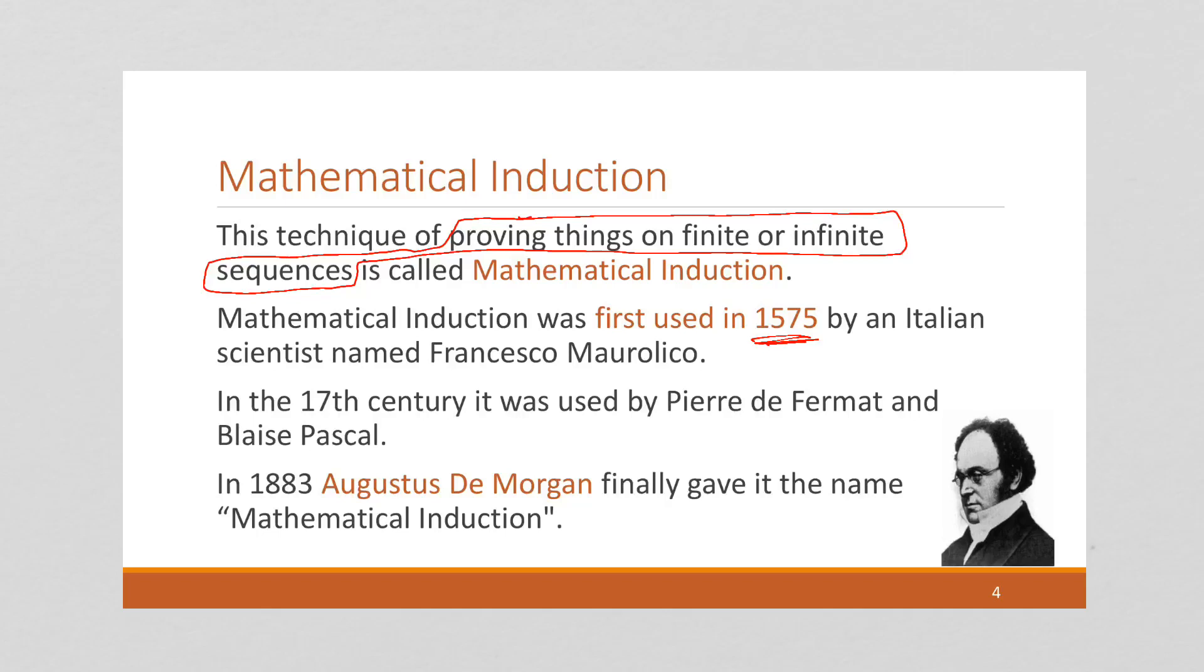In the 17th century, it was used by the famous mathematicians Pierre de Fermat and Blaise Pascal, and finally Augustus De Morgan, who gave the name De Morgan's Rule or De Morgan's Law, finally gave it the name mathematical induction.